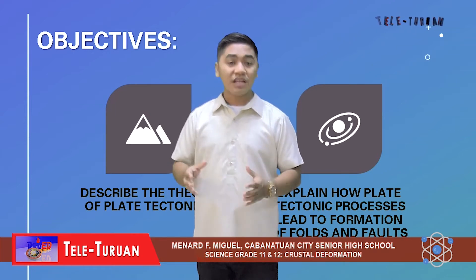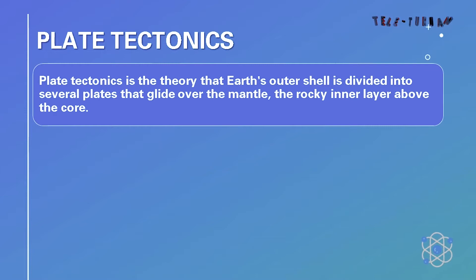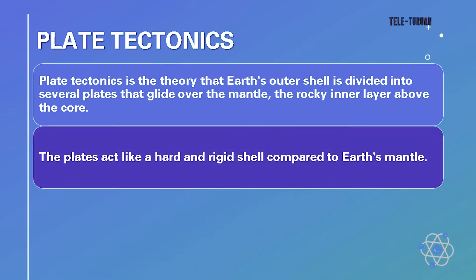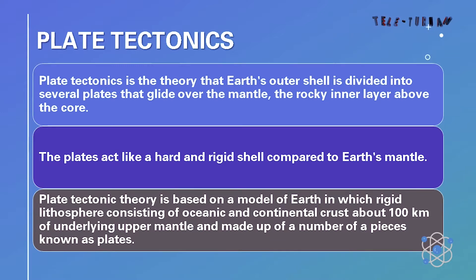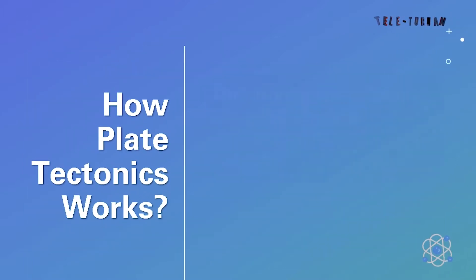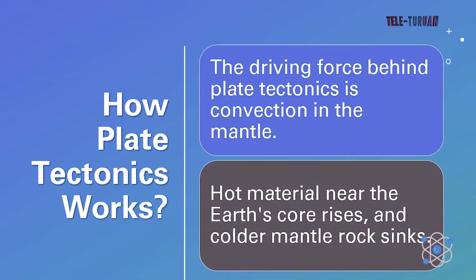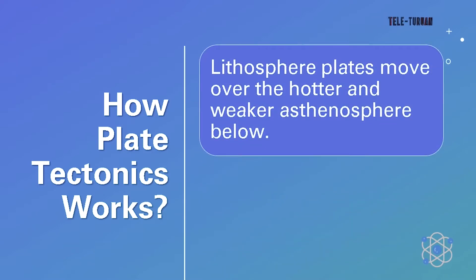Our first topic for today is all about plate tectonics. Plate tectonics is the theory that Earth's outer shell is divided into several plates that glide over the mantle, the rocky inner layer above the core. The plates act like a hard and rigid shell compared to Earth's mantle. Plate tectonic theory is based on a model of Earth in which rigid lithospheric plates consist of oceanic and continental crust, about 100 km of underlying upper mantle, made up of a number of pieces known as plates.